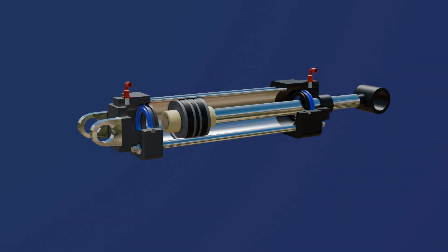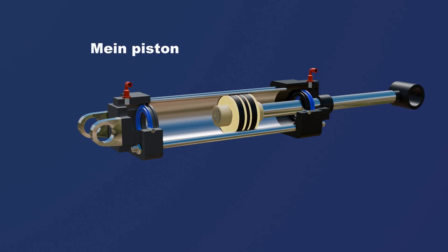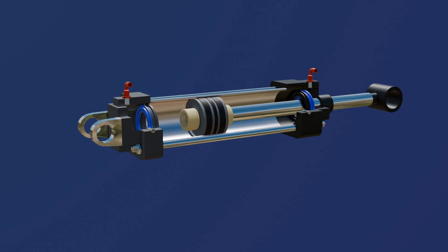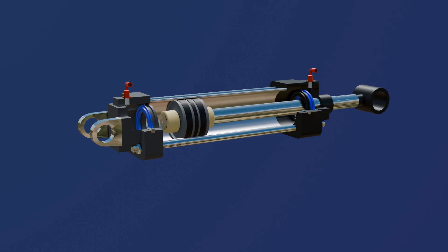Inside the cylinder bore, there is the main piston. The main piston moves back and forth when there is a difference in pressure on either side of it.